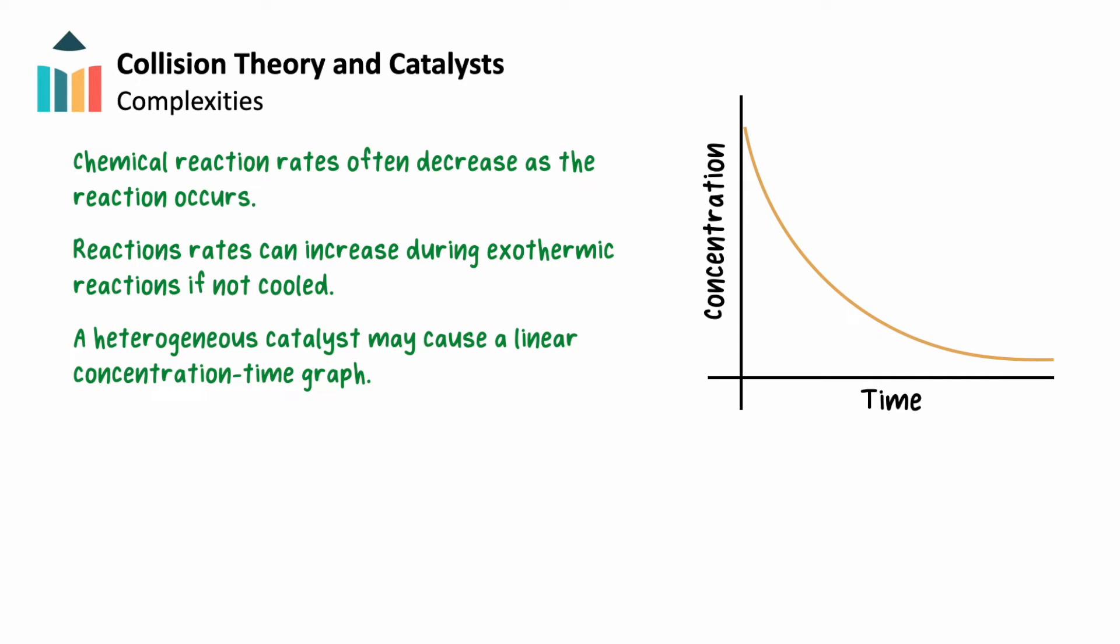The rates of chemical reactions depend on many factors: reaction concentrations, temperatures, and catalysts. Usually, reaction rates decrease over time as reactants are used up, causing the reaction to take place more slowly. We see this in our concentration versus time graph as the slope of our line getting more shallow over time.